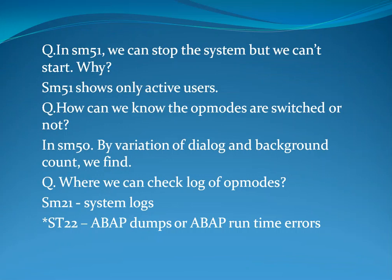In SM51, we can see the system but we can't stop it — because SM51 shows only active servers. To check if OP modes have switched, in SM50, look for variation in the dialogue and background work process count. System logs are checked in SM21, and ABAP dumps or ABAP runtime errors are checked in ST22.